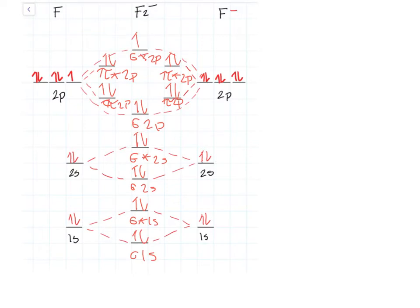The ones that I'm going to be circling in blue are going to be the bonding electrons, and the ones in black are going to be the anti-bonding electrons.